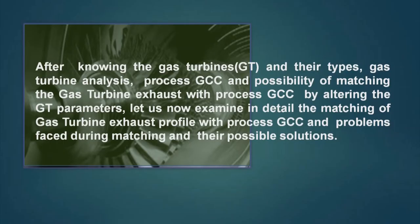In lecture number one, the part one of this series on gas turbine, we learnt about gas turbines and their types. We analyzed the gas turbine and saw the process GCC and the possibility of matching the gas turbine exhaust with the process GCC by altering the GT parameters. If the matching is not very accurate, we have some parameters in hand using which we can adjust our gas turbine exhaust gas temperature to suit the GCC. Now we will examine in detail the matching of the gas turbine exhaust profile with the process GCC and the problems faced during matching and their possible solutions.